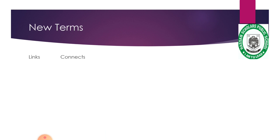Next is links. Links means connects — one thing is connected to another, that is called links. For example, when we charge our mobile or laptop, the charger connects the mobile. That connection is called a link. So links means something that is connected.